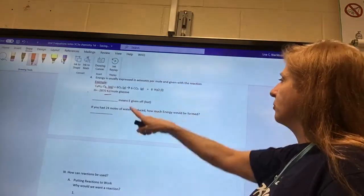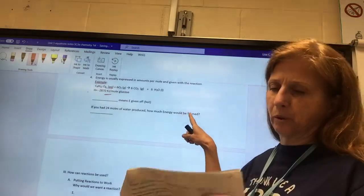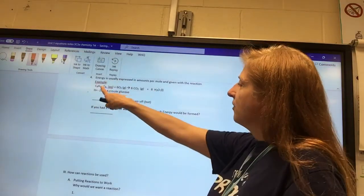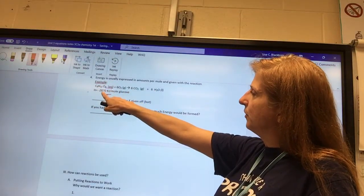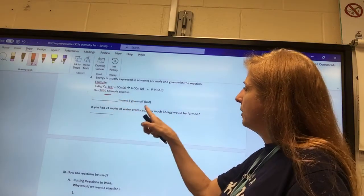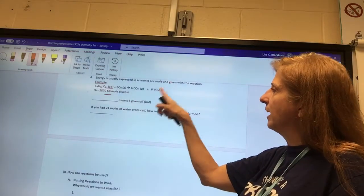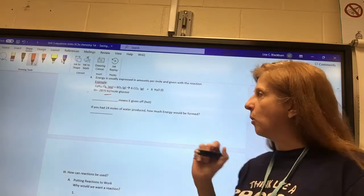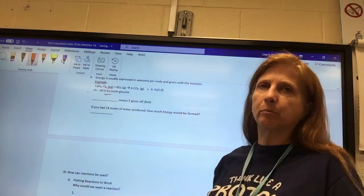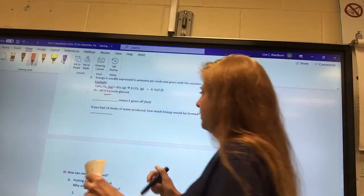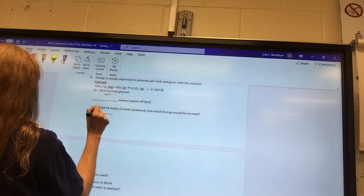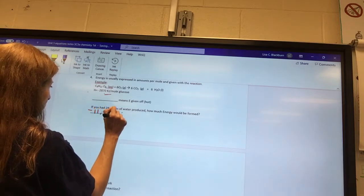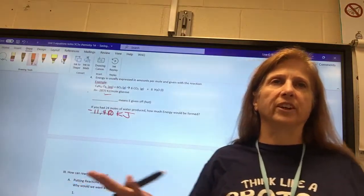If you had 24 moles of water produced, how much energy would be formed? We look at our ratio. Our ratio is 1 to 6. So 1 is negative 2,870. But if we had 24, then what is the relationship between 6 and 24? What times 6 is 24? 4. So we would multiply that times 4. The answer is 11,480 kilojoules.